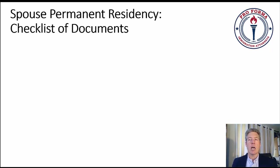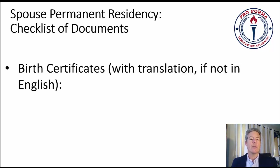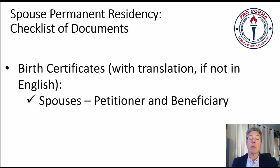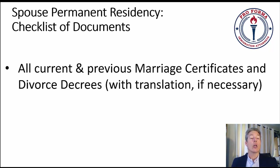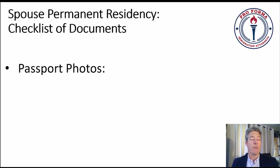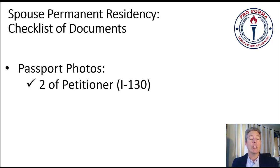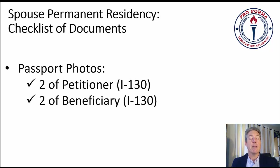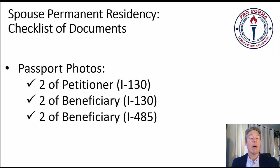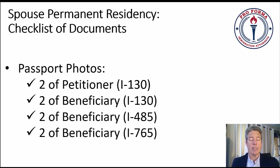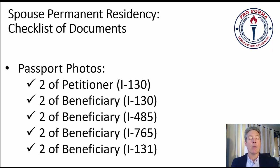Now let's talk about the checklist of documents. We start with birth certificates — if they're not in English, they need to be translated. We'll need those for both the petitioner and the beneficiary, and all children on either side. Then all current and previous marriage certificates and divorce decrees with translation if necessary. Passport photos: two of the petitioner, which get stapled to the I-130, and two of the beneficiary, which also get stapled to the I-130.